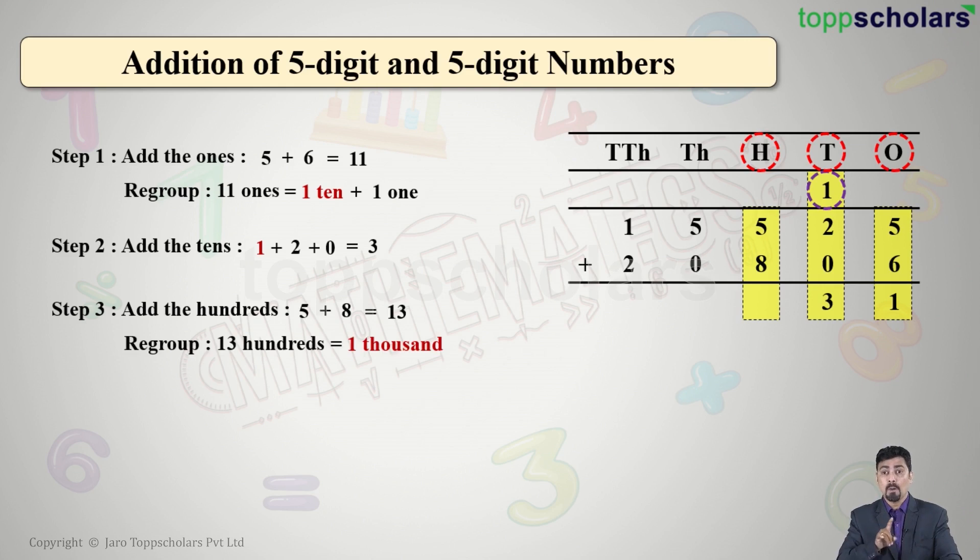In the hundreds column, when we have 13, we have 13 hundreds. We cannot write two digits in a single column, so we regroup it. We write 3 in the hundreds and carry the 1 forward to the thousands place.